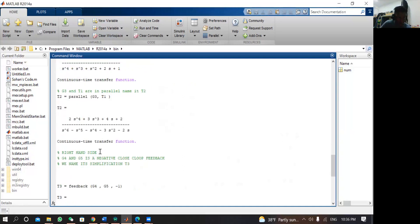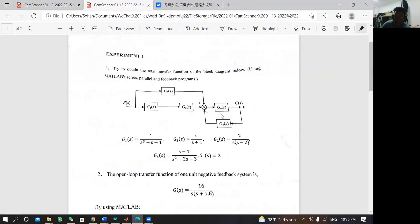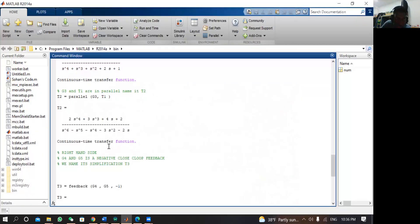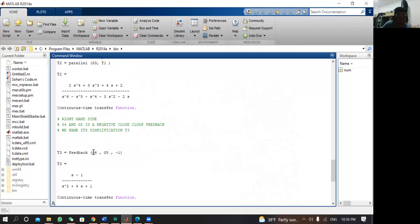Now the right-hand side. This is not in parallel because the arrow directions are not the same. They are all leading to a summing point, but this arrow direction is going this way and this one is coming this way, which means this is not in parallel. This is a closed loop, a negative feedback loop. We need to combine these two as a negative feedback into one single function. We type T3 equals feedback(G4, G5), and here is the sign. It's a negative feedback, so here is minus 1. This minus 1 is the sign.